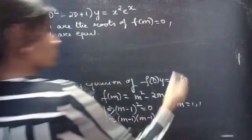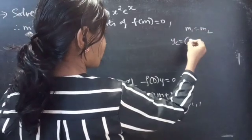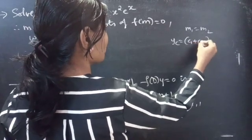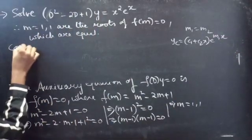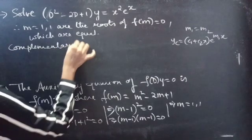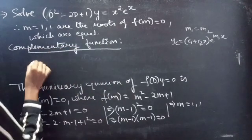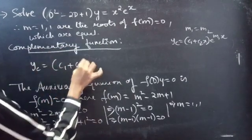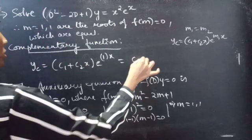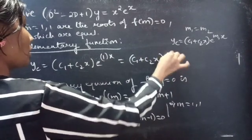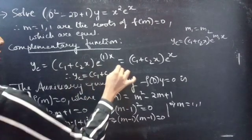We know that when two roots m₁ and m₂ are equal, yc will have two terms in brackets. Since we have two equal roots, we get yc = (c₁ + c₂x)eˣ. For m = 1, the complementary function is yc = (c₁ + c₂x)eˣ.